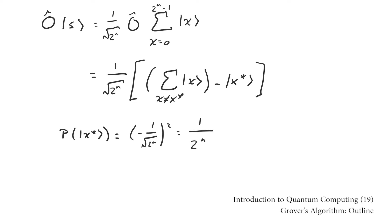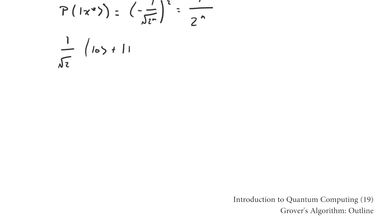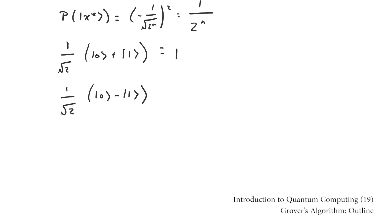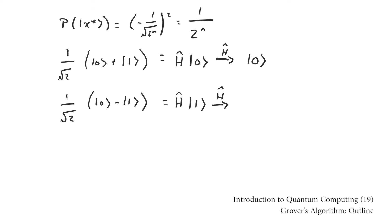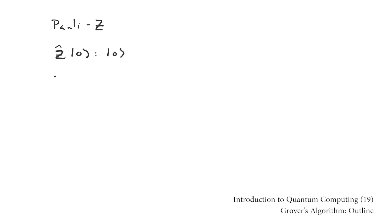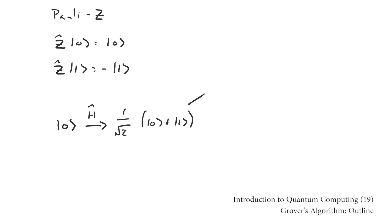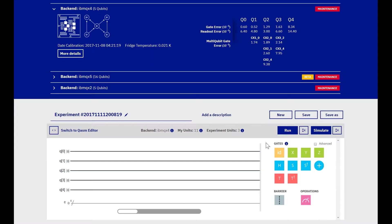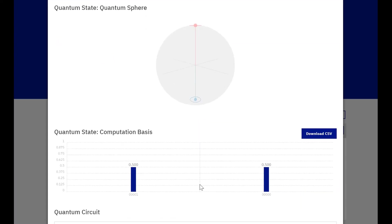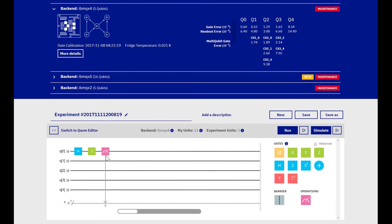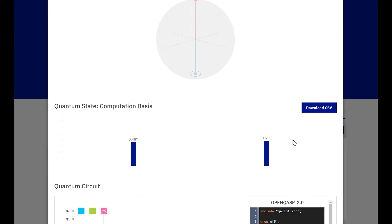The problem is figuring out how to make the fact that x star is special measurable. It's helpful to look at the case of a single qubit system where x star equals one. If we follow the application of the Oracle with an application of a Hadamard gate, we can easily discover x star with a measurement. The Oracle in this case is simply the Pauli-Z gate, and we're already familiar with creating the uniform superposition and Hadamard gates. Making a measurement after creating the uniform superposition tells us nothing. Making a measurement immediately following the application of the Oracle also tells us nothing, which illustrates the initial problem — the fact that the special state has been marked doesn't make it measurable.